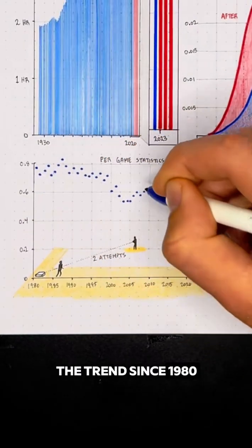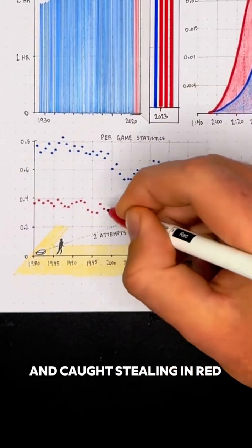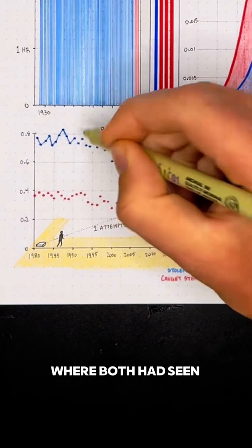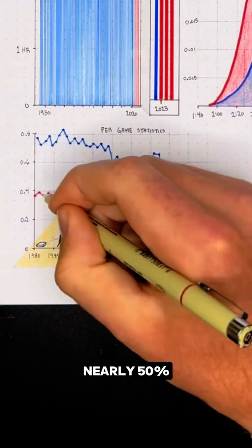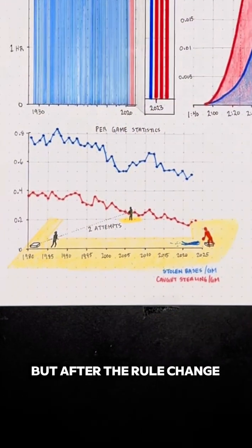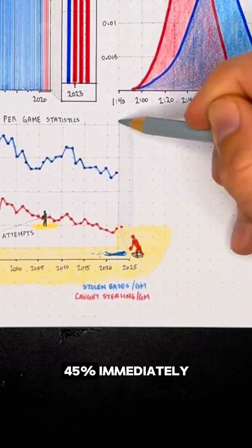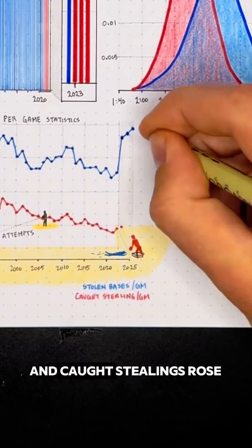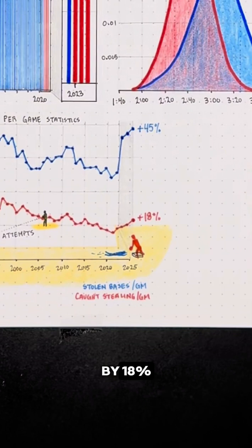This chart here shows the trend since 1980 in base stealing in blue and caught stealing in red, where both had seen a sharp decline of nearly 50% over the previous four decades, but after the rule change, stolen bases jumped by 45% immediately, and caught stealings rose by 18%. By all accounts,